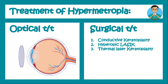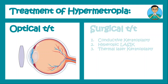Treatments of hypermetropia include optical treatment and surgical treatment. Under surgical treatment, you can have conductive keratoplasty, hyperopic LASIK, and thermal laser keratoplasty. Surgical treatments will be covered in a separate video.